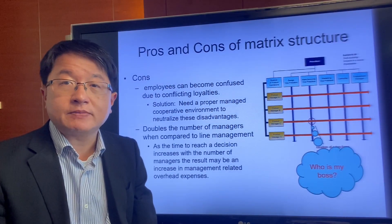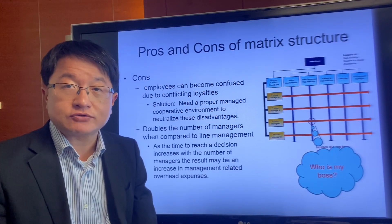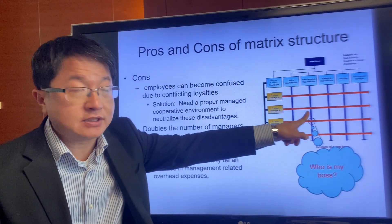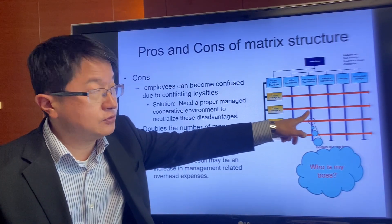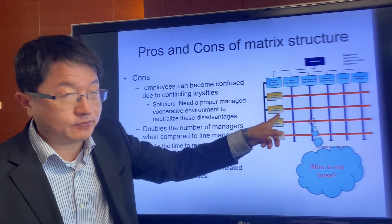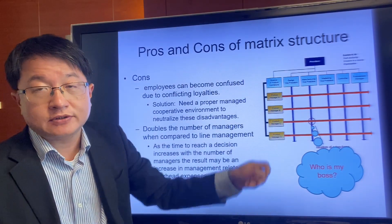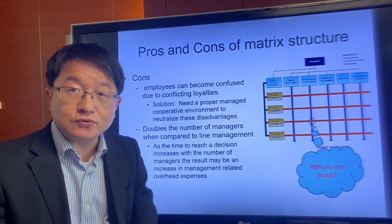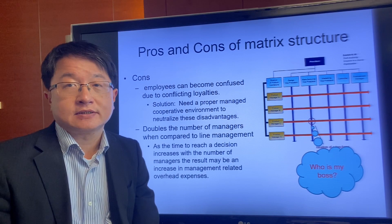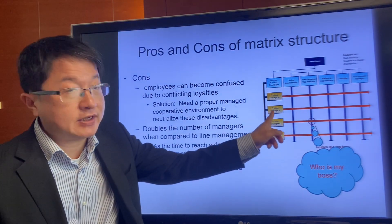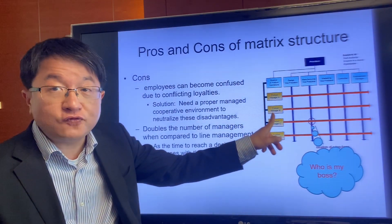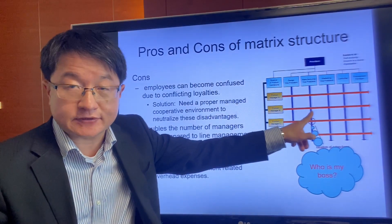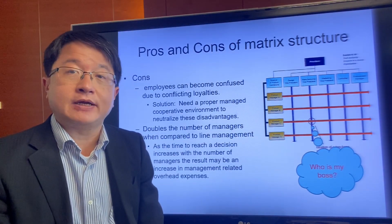However, there are problems with the matrix structure. A staff member must report to both the functional head and the product manager, meaning they have two supervisors. Each supervisor cannot fully manage the time and resources of that staff member, which may create conflicts.